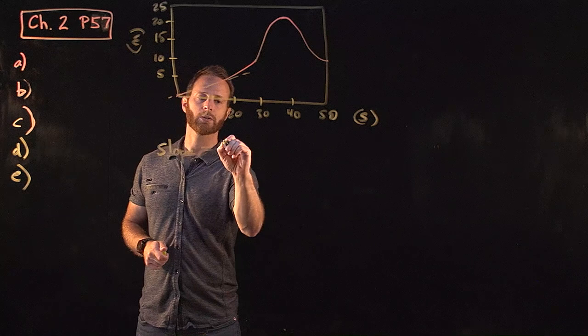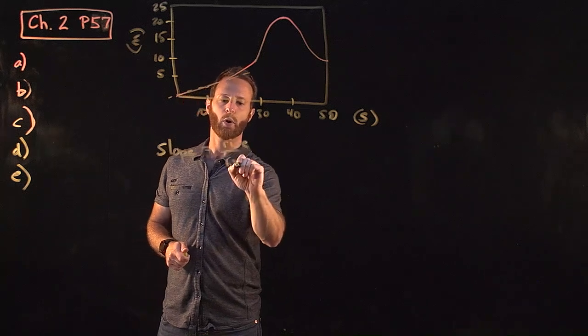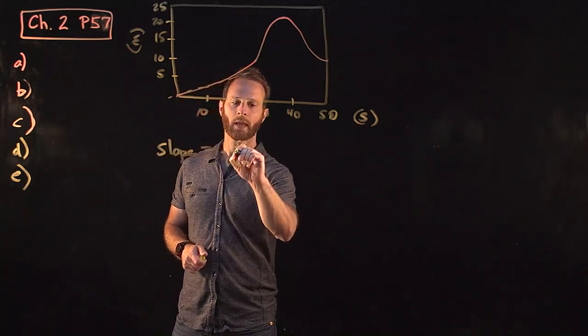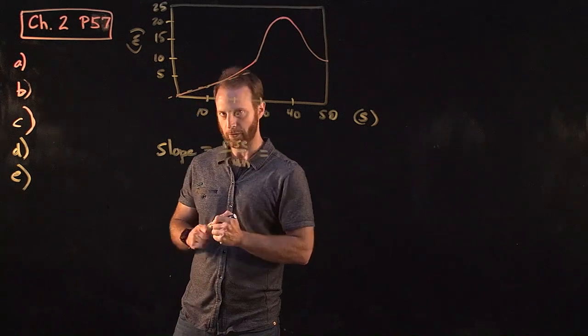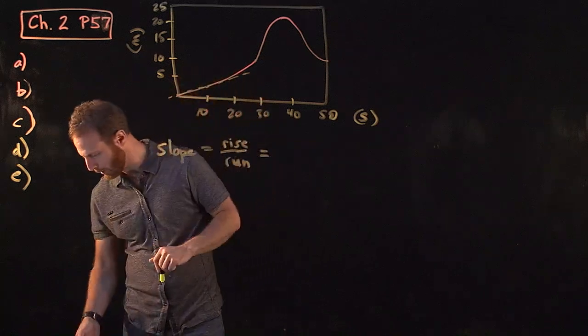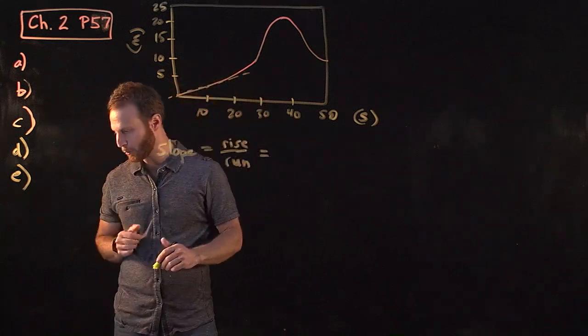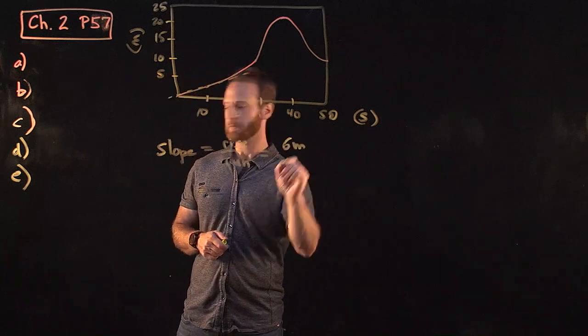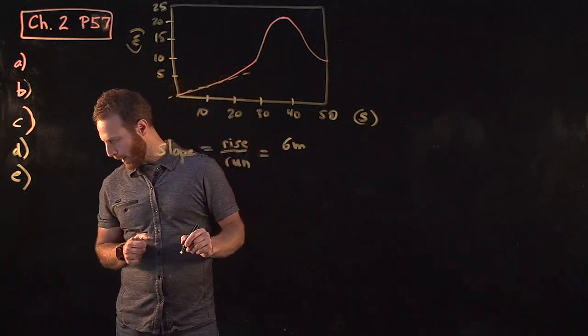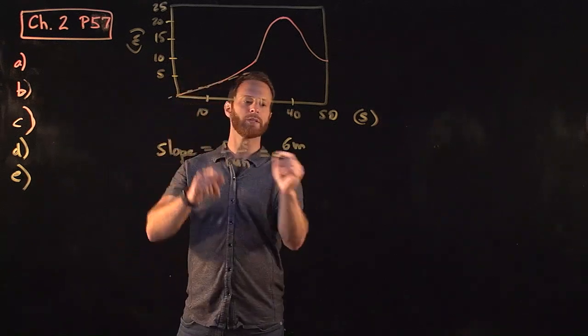Remember, the slope is rise over run. Since we're doing an estimate here, if you're not super precise, I wouldn't worry terribly about it. I estimate that it rises approximately 6 meters between a time of 0 and 20 seconds.